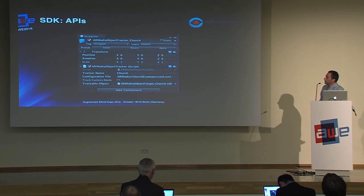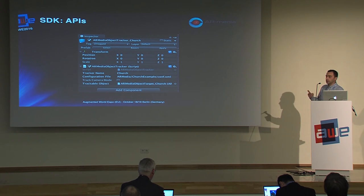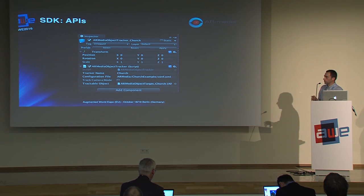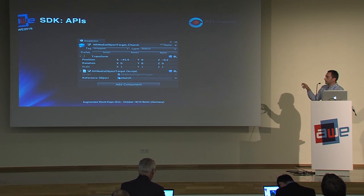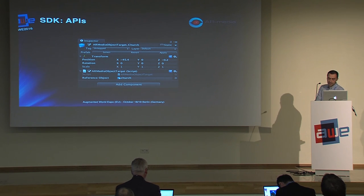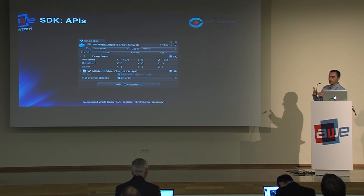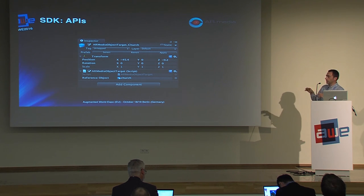For each tracker you provide the tracker name — used to handle tracking events — and a configuration file from the developer portal containing the tracking data. The augmented content is attached to an ARMedia Object Target. So you essentially have three entities in your scene: the ARMedia SDK, an object tracker or planar tracker, and the related targets attached to each tracker.